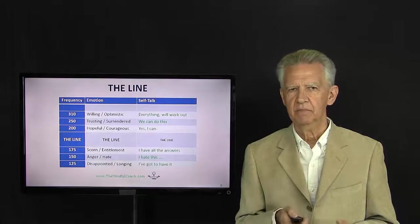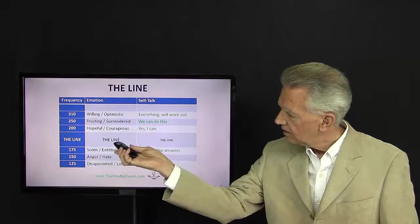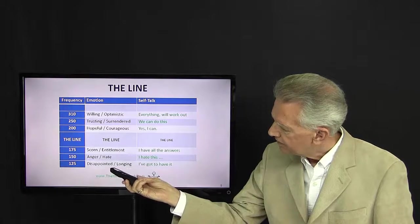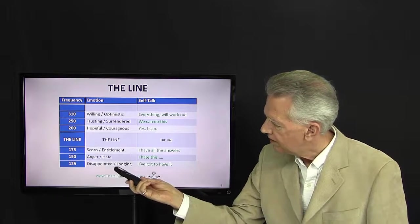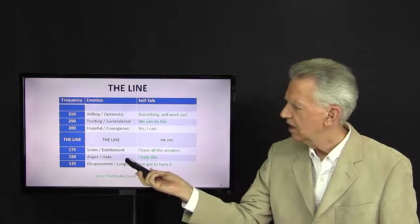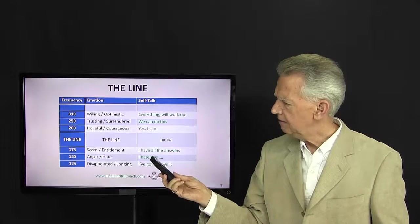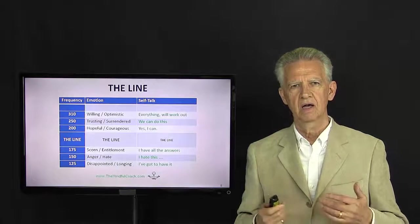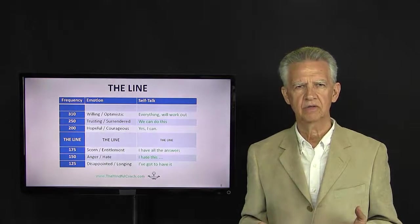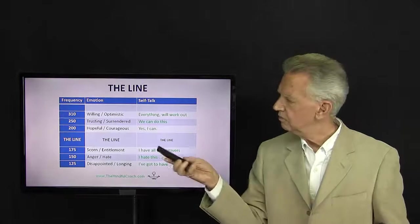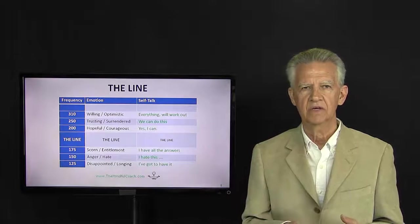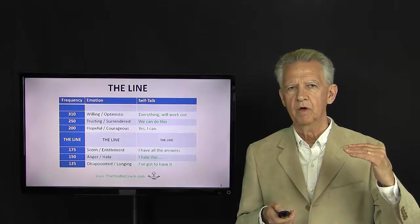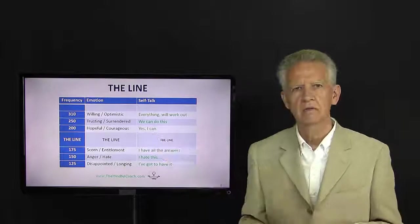So the tipping point is the line. Below this would be the level that's more fear-based: disappointing, longing to get something angry, hateful, scorn, 'I'm entitled,' this shouldn't be happening to me. And then once we cross over into courage and hopeful, there's something I can do. I can change this. I just know that I can. Now we have moved to the other side, into the love base. So this is where we can keep moving up and up, over time and with practice, into these higher mind states.